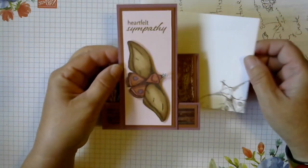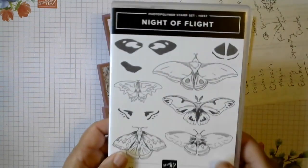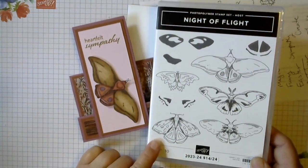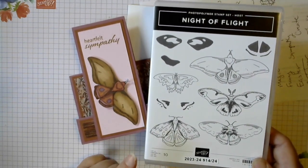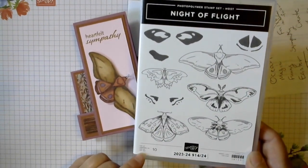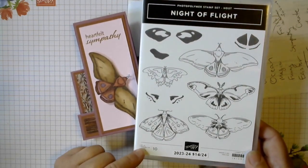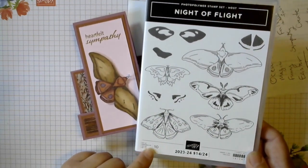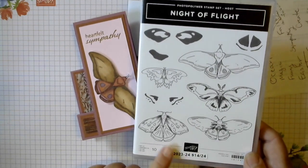So to get the hostess set, let me pull it in here again to show you the Night of Flight. When your order reaches $150, you start to earn hostess rewards. And there are sets in the back of each of the catalogs that are hostess only sets. So the only way you can get them is to buy them with hostess rewards, and they're always like half price. So you would use, and I don't have it in front of me right now, but say this stamp set is worth $30, you would use $15 of your hostess reward dollars to purchase it. So it's always a great bargain and kind of special. I like to collect them.